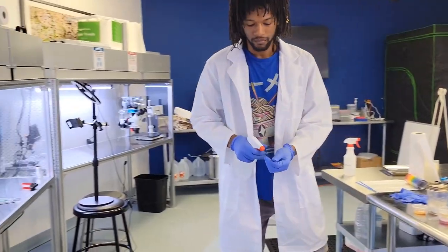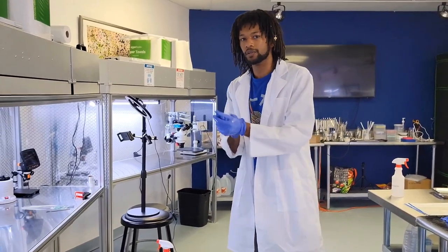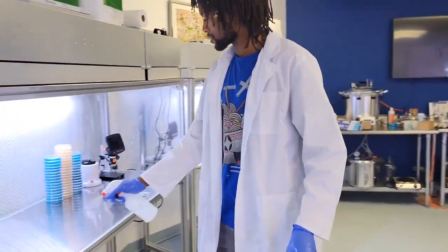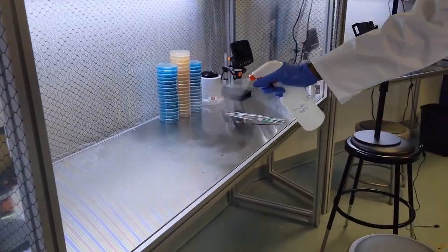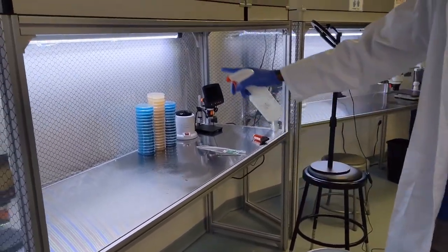Flow hood's on. 70% iso. So before I put things in my sterile space, I'm just going to lightly spray my area. That's going to evaporate because we've got the sterile air coming down from the top.